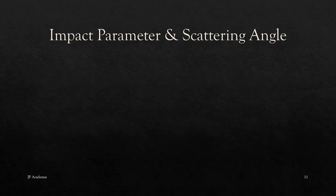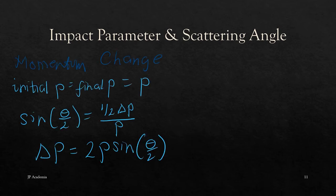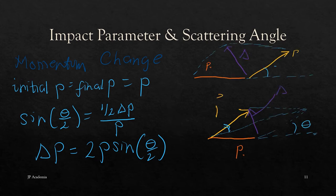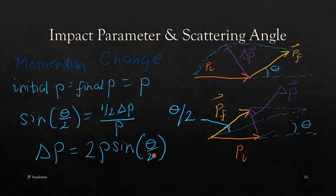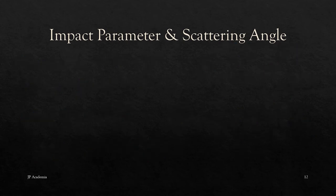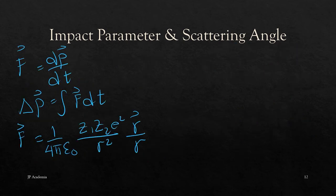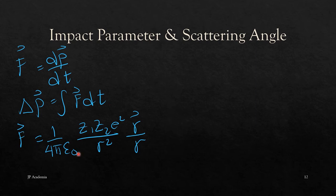Let us talk about the change of momentum in the scattering. Given that this is an elastic scattering, the magnitude of the momentum must stay the same; only the direction of the momentum is changed due to the Coulomb repulsion. Therefore, using this diagram at the right, we can derive this expression of the change in momentum, which is equal to 2P sine theta over 2. Using Newton's second law and the Coulomb force, your force F is equal to the change in momentum with respect to time, and we can derive delta P as the integral of your force with respect to time.